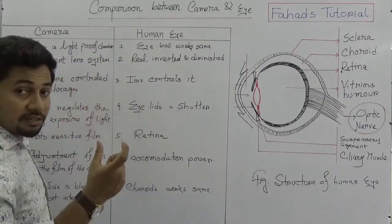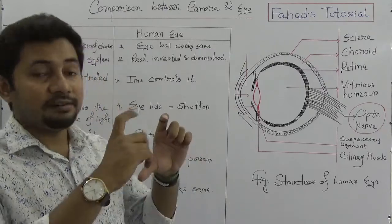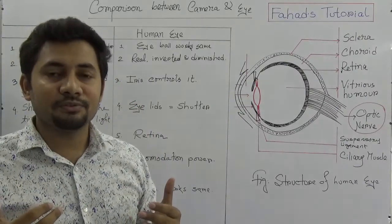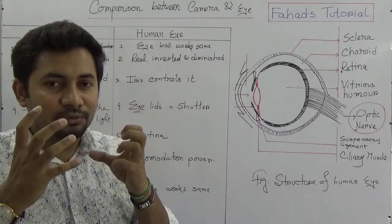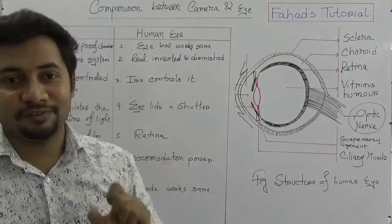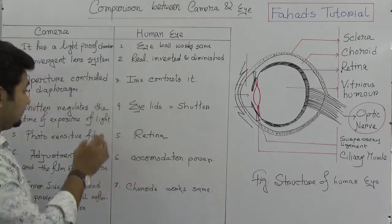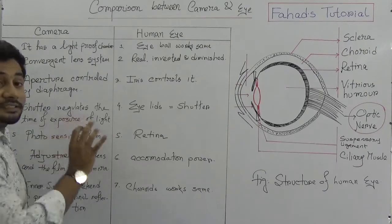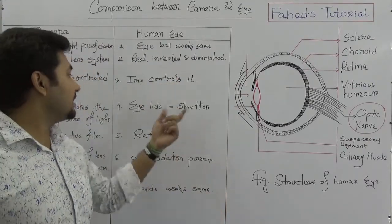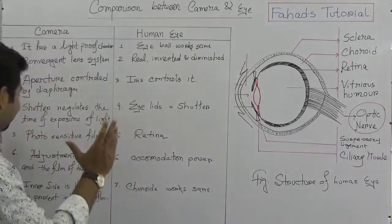Number four is the shutter. The shutter regulates the time of exposure of light in a camera. In our human eyes, the eyelids are doing that function — we can close and open our eyes and control it voluntarily. So eyelids work as the shutter of a camera, regulating the time of exposure of light.